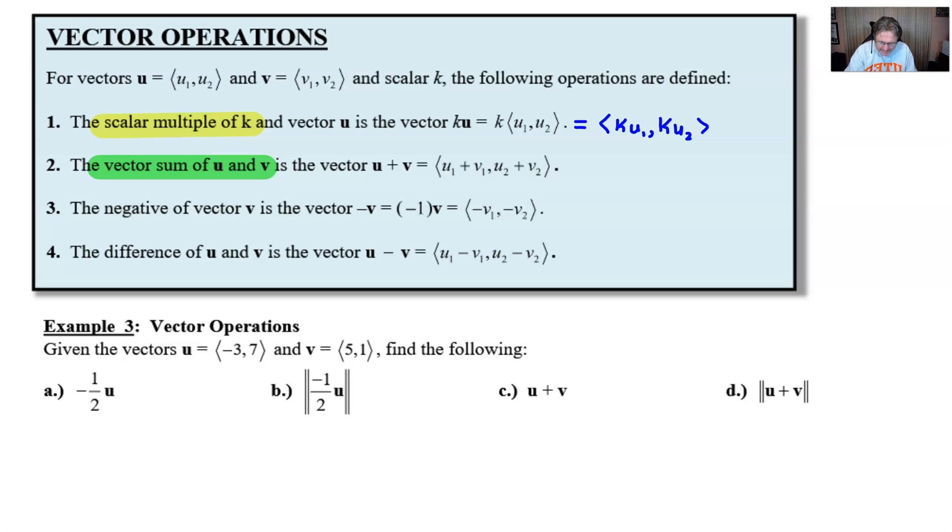Now if we do have a negative vector v, that's kind of the same thing as really the scalar. It's like the k value is negative one, and you can see here that I've gone ahead and distributed that through to show what that would look like. And then finally, the difference of u and v, probably what you would think: you're just going to subtract u1 minus v1 in that order and pair that up with u2 minus v2. So those are going to be the most common vector operations.